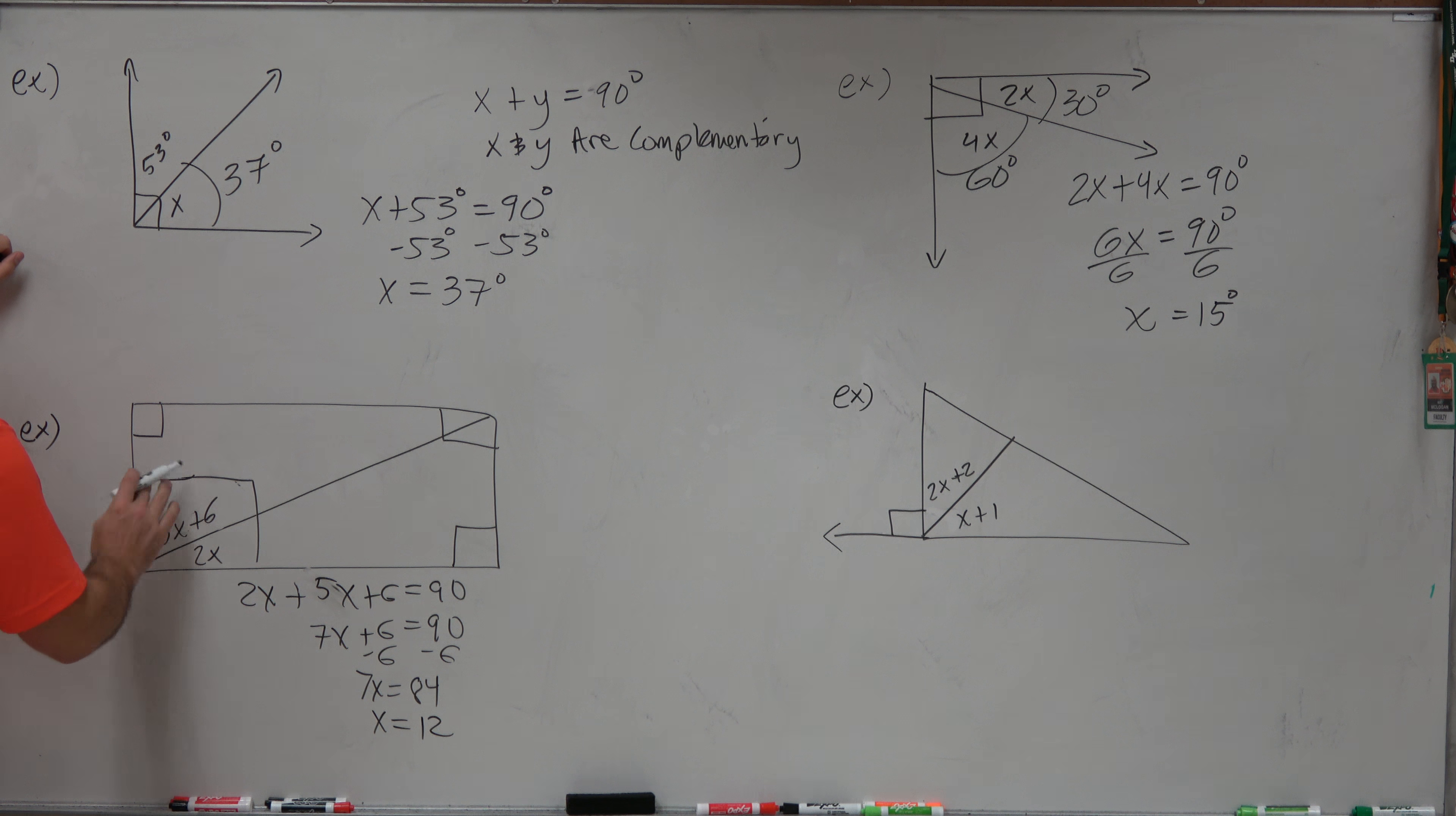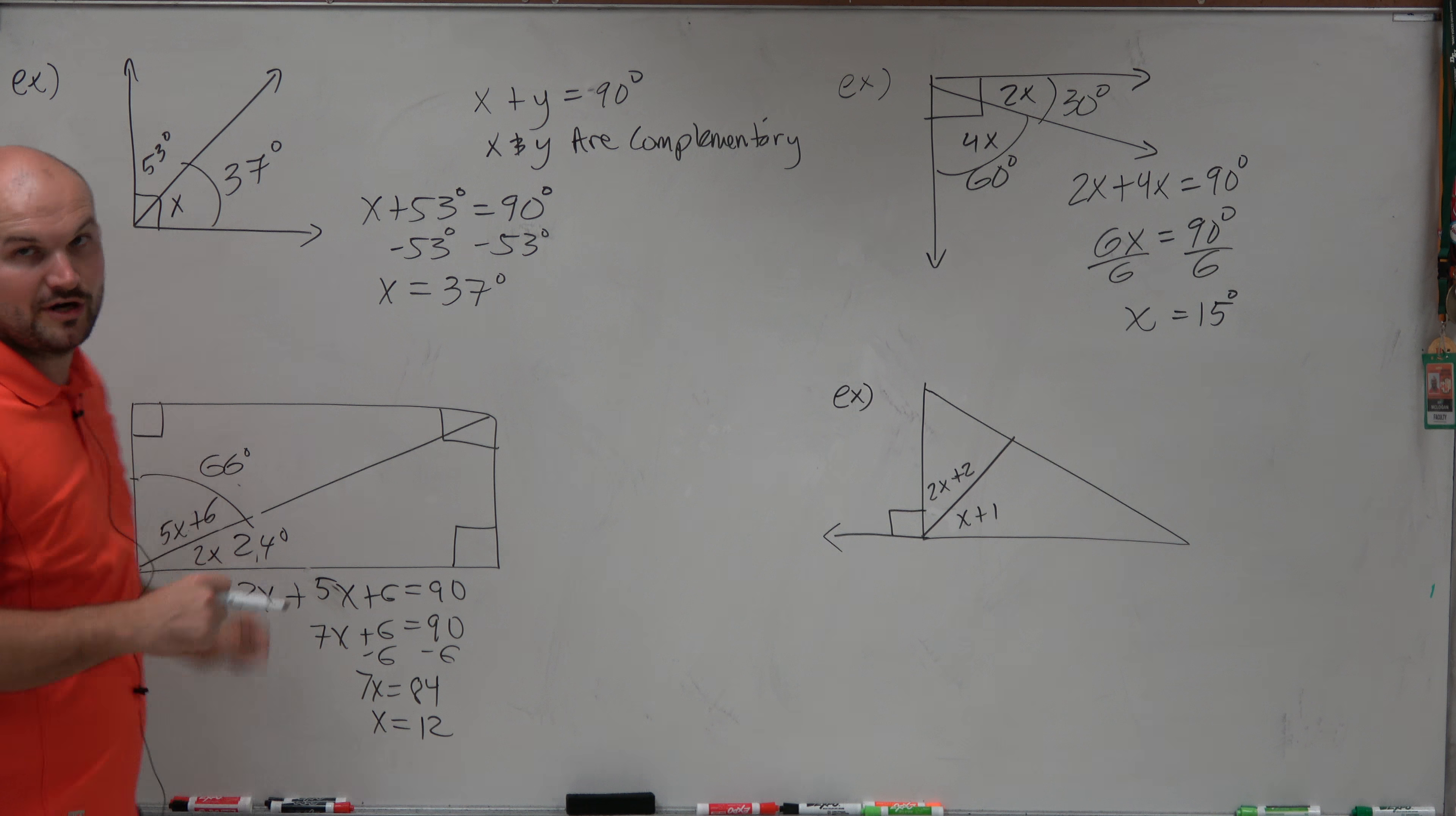So therefore, if x equals 12, let's go ahead and find the measure of each one of these angles. So 5 times 12 is going to be 60 plus 6 is 66 degrees. And then 2 times 12 is 24 degrees. So does 66 plus 24 equal 90? Yes, it does. Very good.